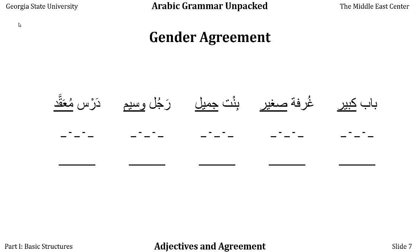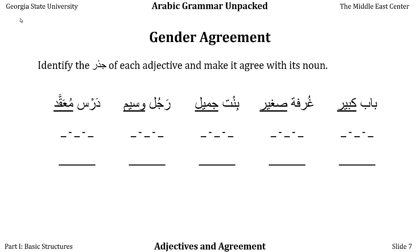Take out the worksheet that goes along with this video, and if you haven't downloaded it already, go ahead and do that now. If we have bab kabir, we're going to put the jidhr of the word in the first row and then make the adjective agree properly in the second row. Notice that in this very first example, I haven't added case markings to the noun, which is quite common in modern standard Arabic.